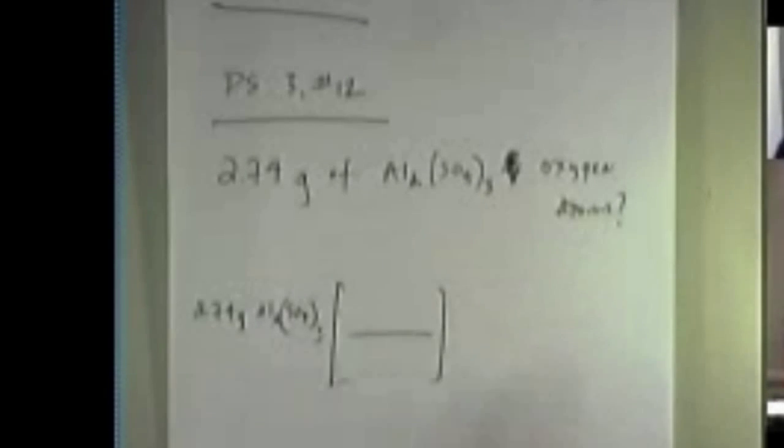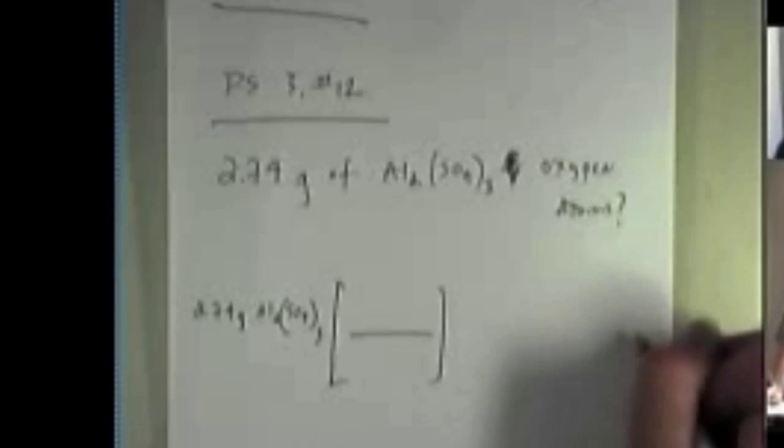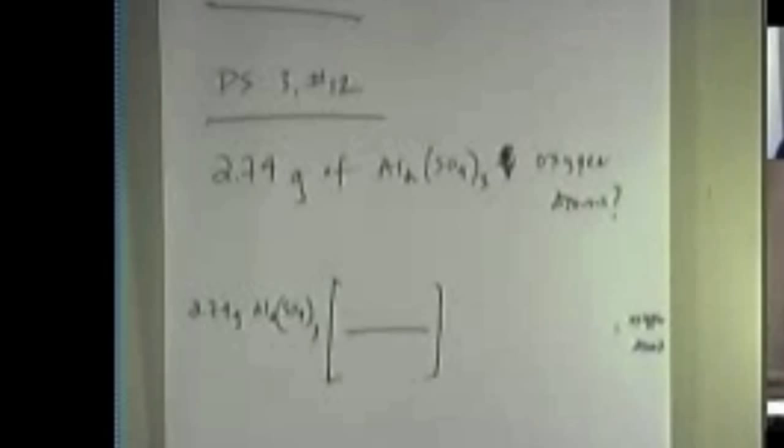because the units will help guide you toward what you put next. So what I put next is, of course, a set of brackets. I eventually want to get to oxygen atoms, so I'm going to kind of have that in my brain. But, pretending that I have no clue what I'm doing, what units are going to go in the denominator here?